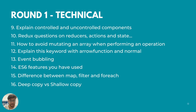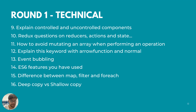She also asked how do you avoid mutating an original array when performing an operation on it — there were a few variations of that question. Next was explaining the 'this' keyword in the context of arrow functions versus normal functions, which is straightforward — you can cover two or three points on that. Then she asked about event bubbling and how to stop it.